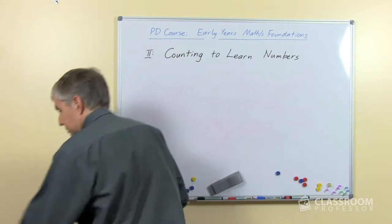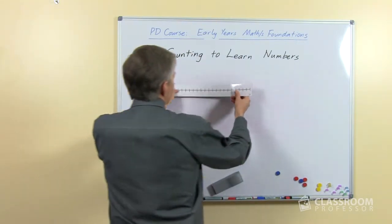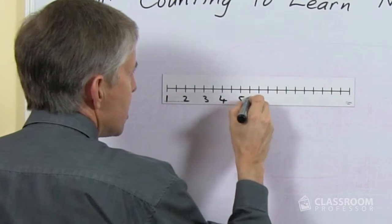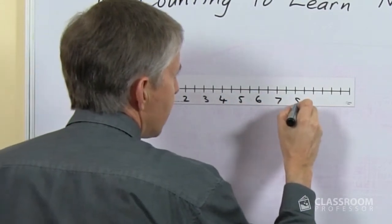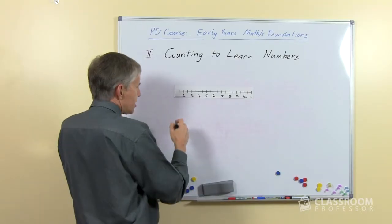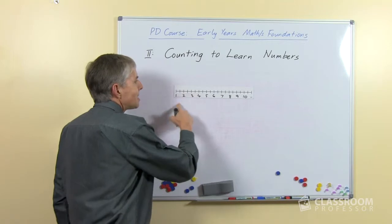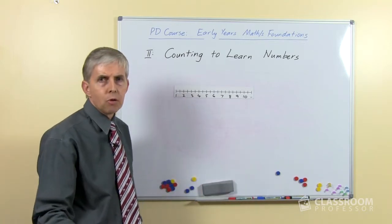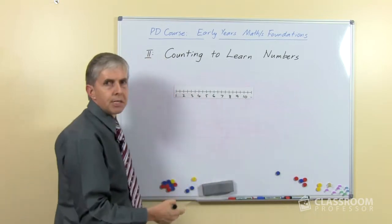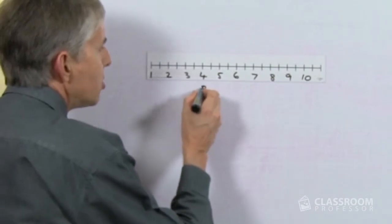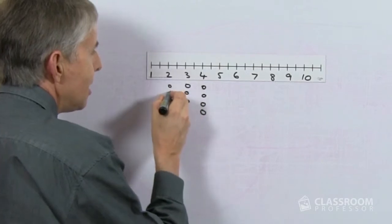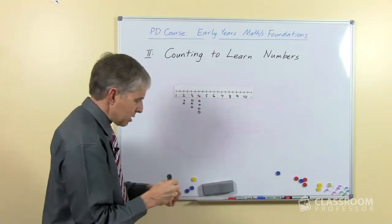I'm going to put up a number line as a resource, labeling it from one to ten. This is a sequence of counting numbers — a sequence of increasing value. Each of these has a representation we could use with counters: this number equals this many counters, and so on. There are lots of different things we can do with students using a number line.